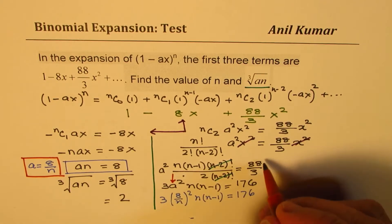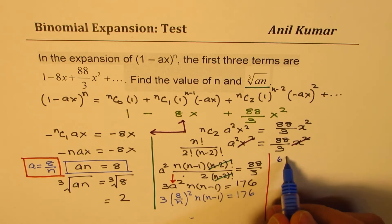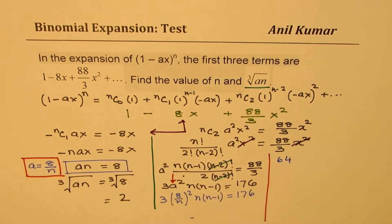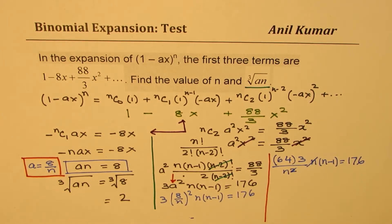Let's calculate this. It's 64, so we get (64/n²) × 3 × n(n-1) = 176. One of the n's cancels, and the other I can take to the other side. So we have 3 × 4 = 12 times 16, which gives us 192n(n-1) = 176n.